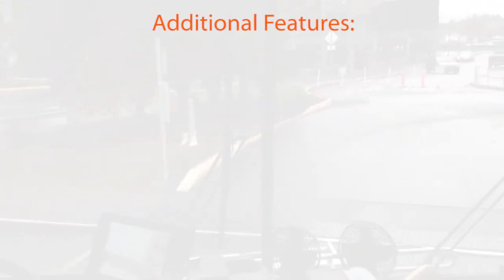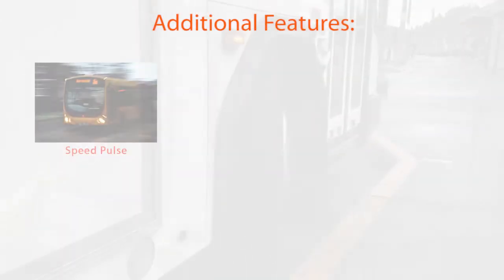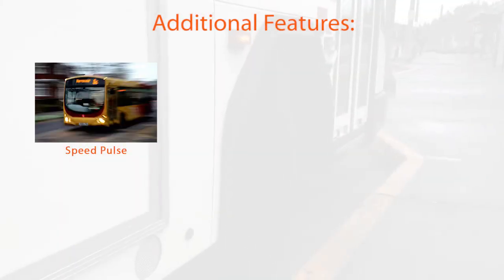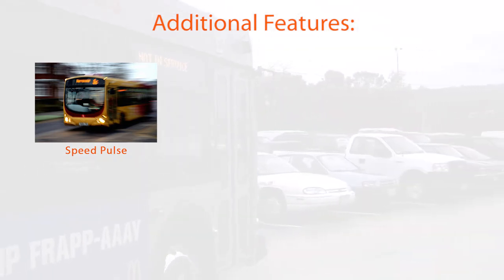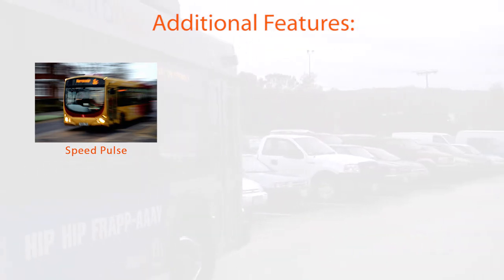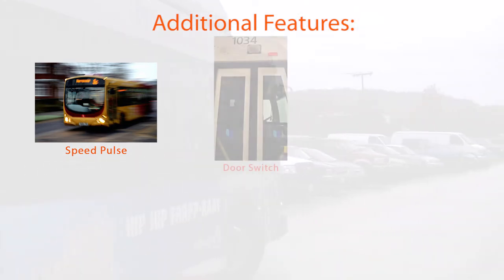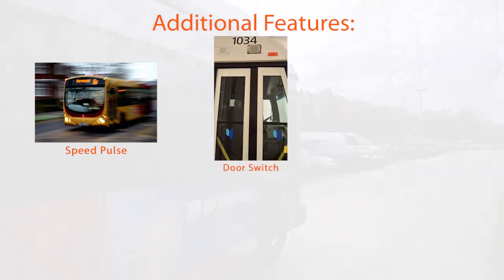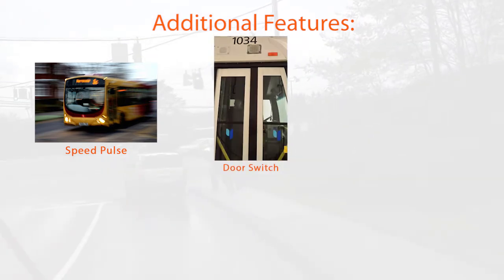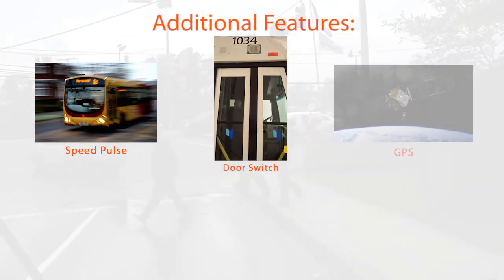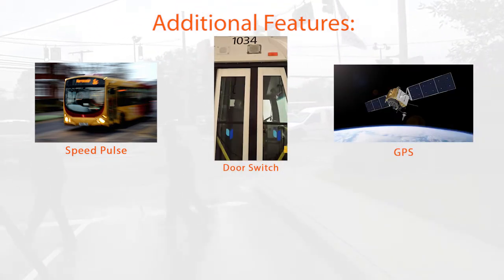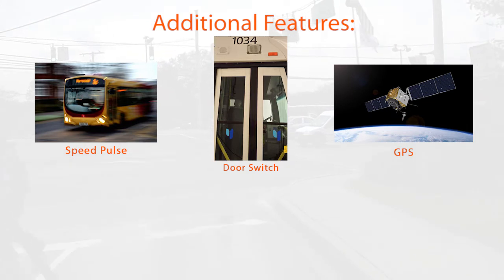Additional features of the Safe Turn Alert 2.0 system include Speed Pulse, which deactivates the system while the bus is traveling above or below a specified speed; Door Switch, which deactivates the system while the door is open; and GPS, which is used to determine the speed of the bus.